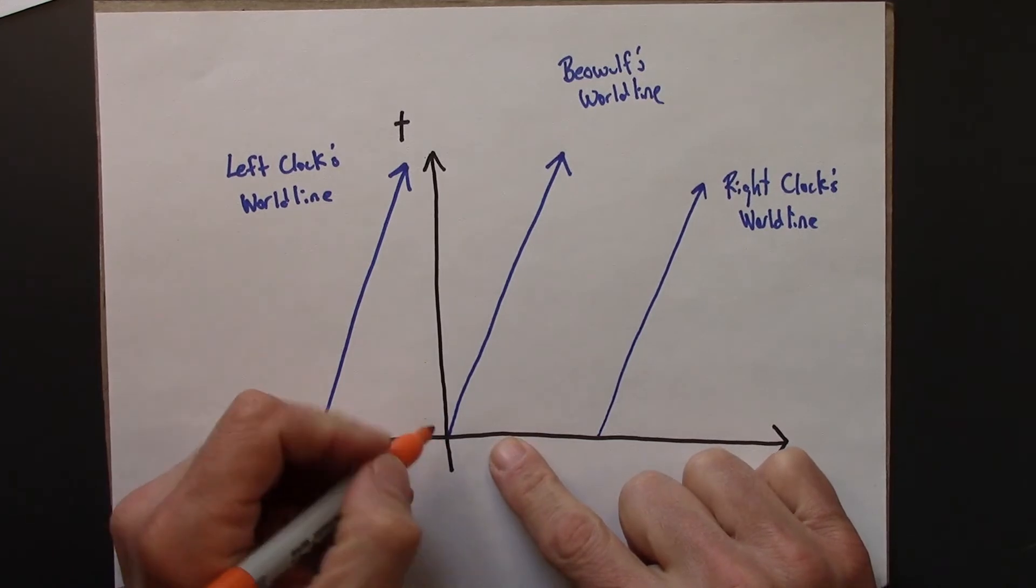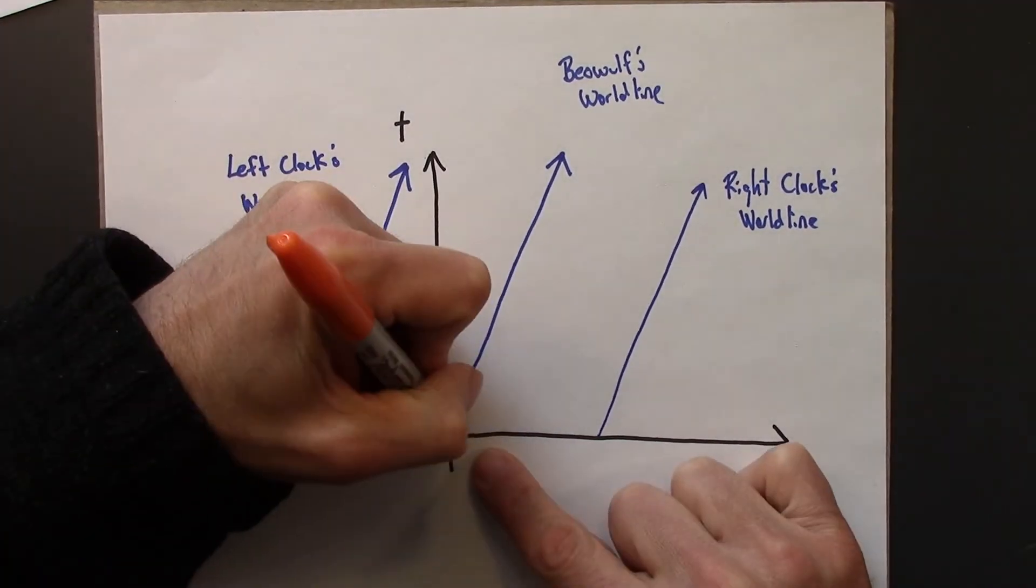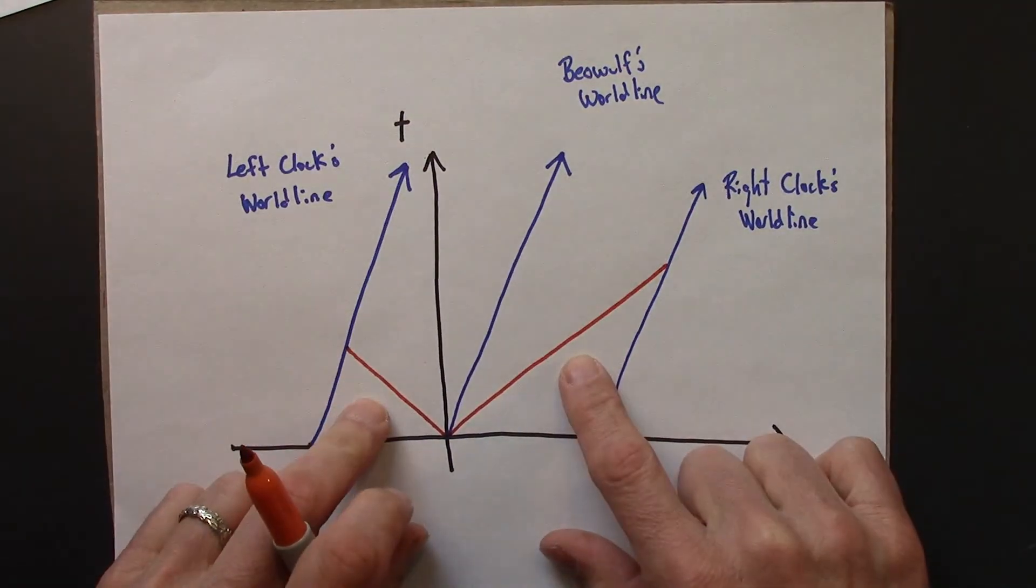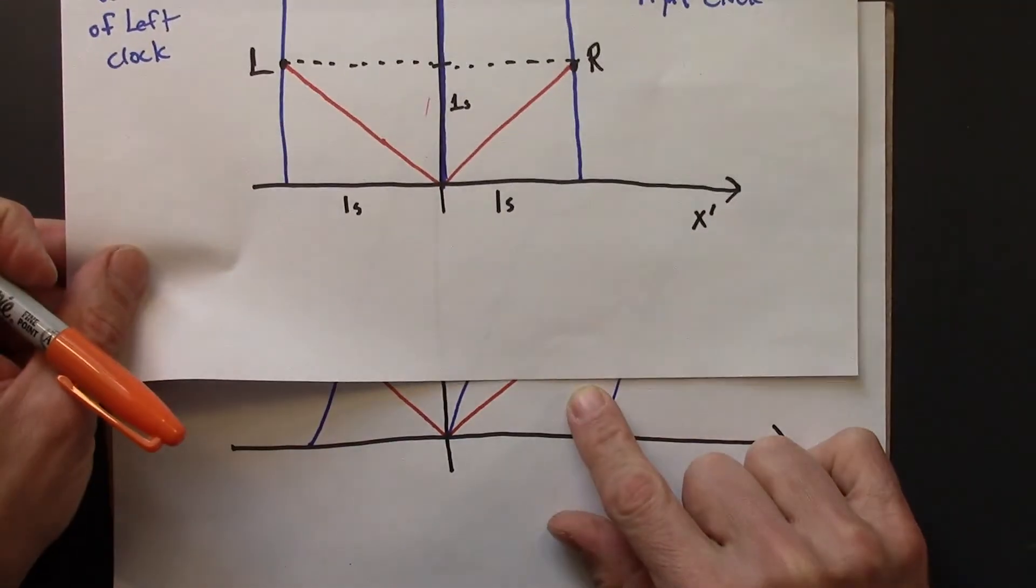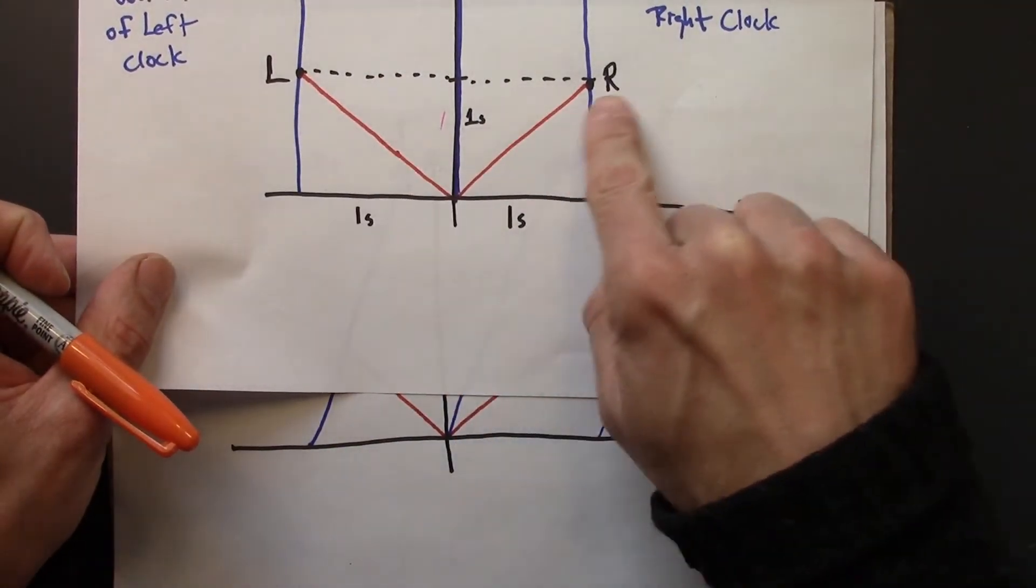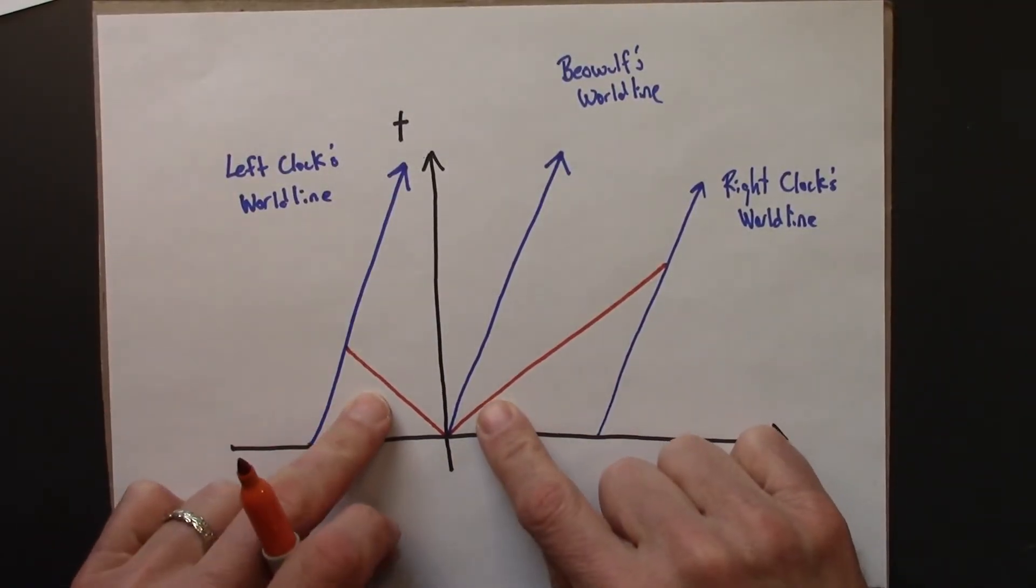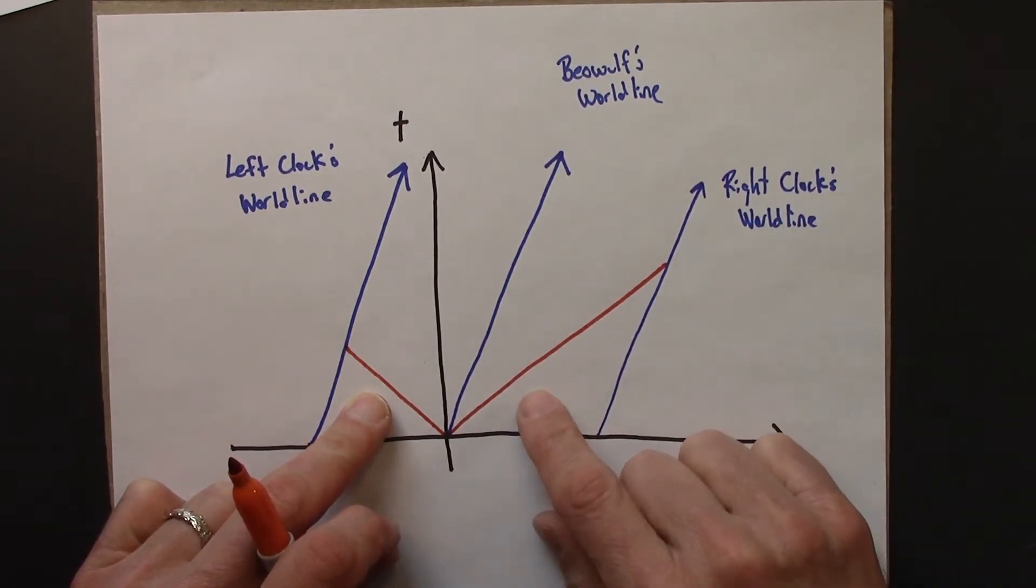So that means that this is going to be the speed of light, and that's going to be the speed of light. So these are the world lines of the light flashes, just like they were here, and they're moving with a slope of one, just like light always does on any space-time diagram, because the speed of light is always measured to be one in any reference frame.